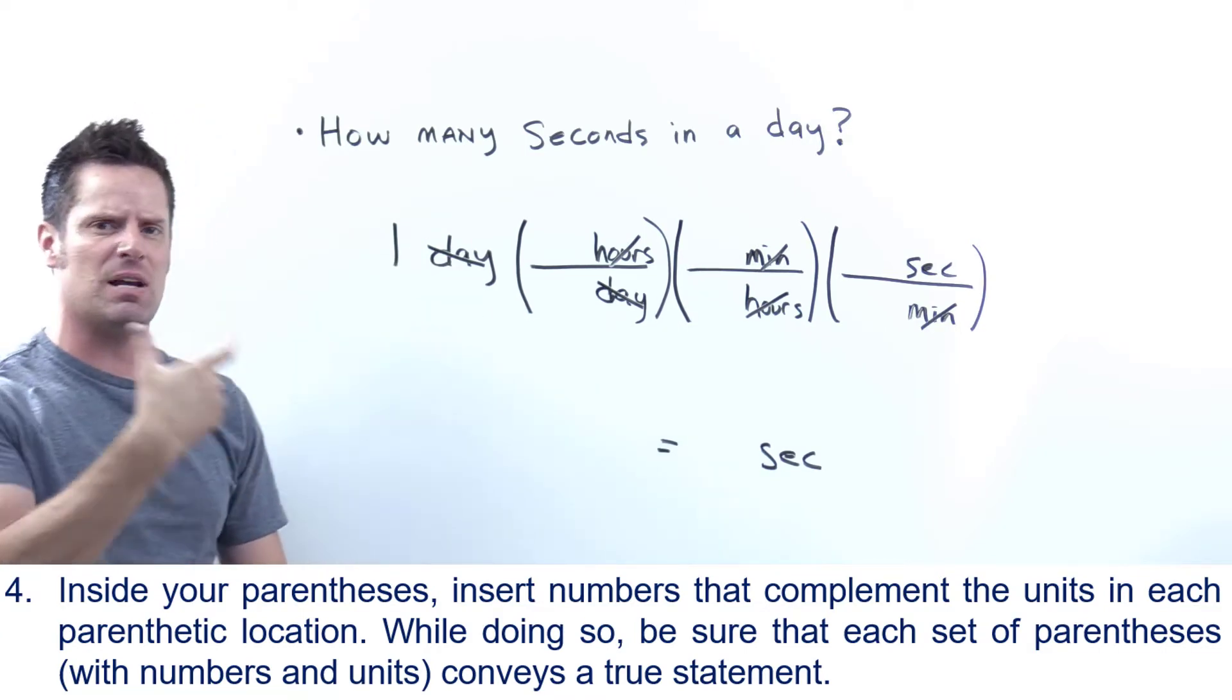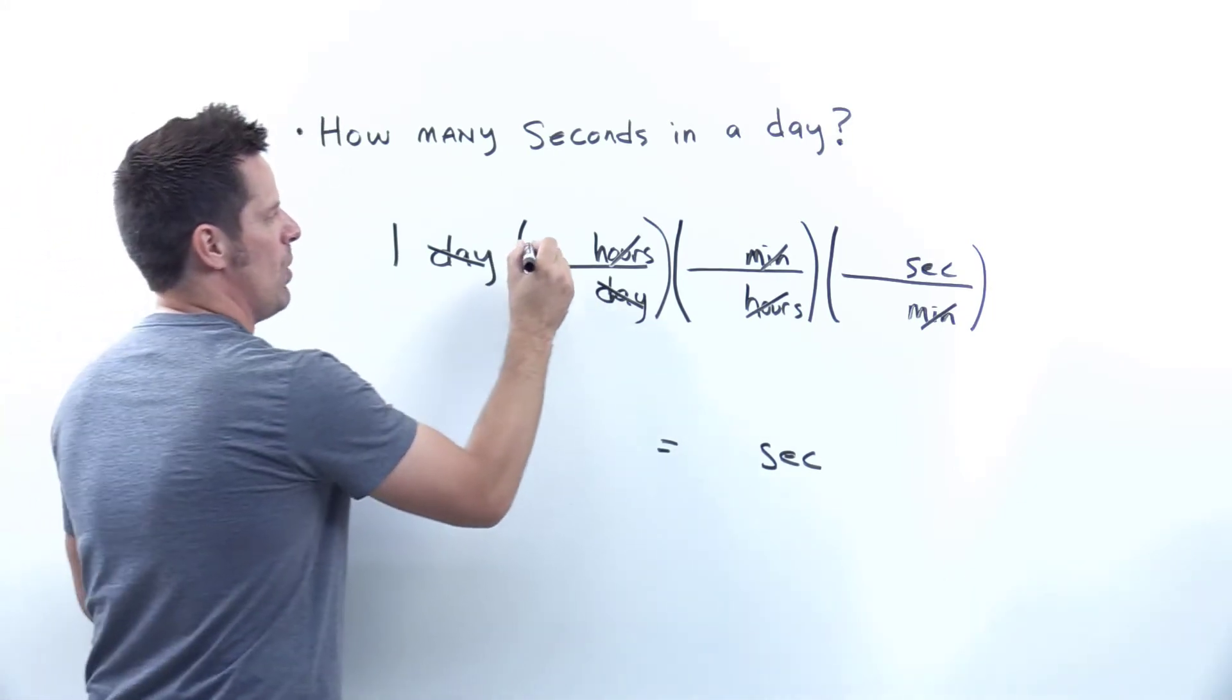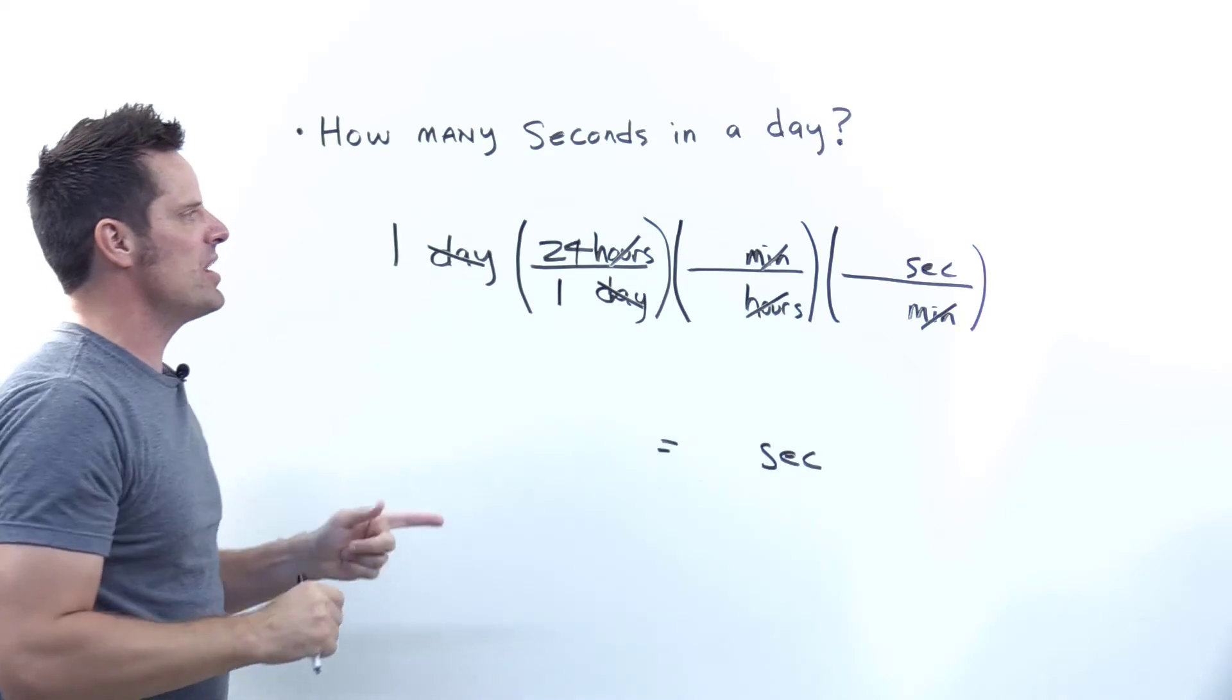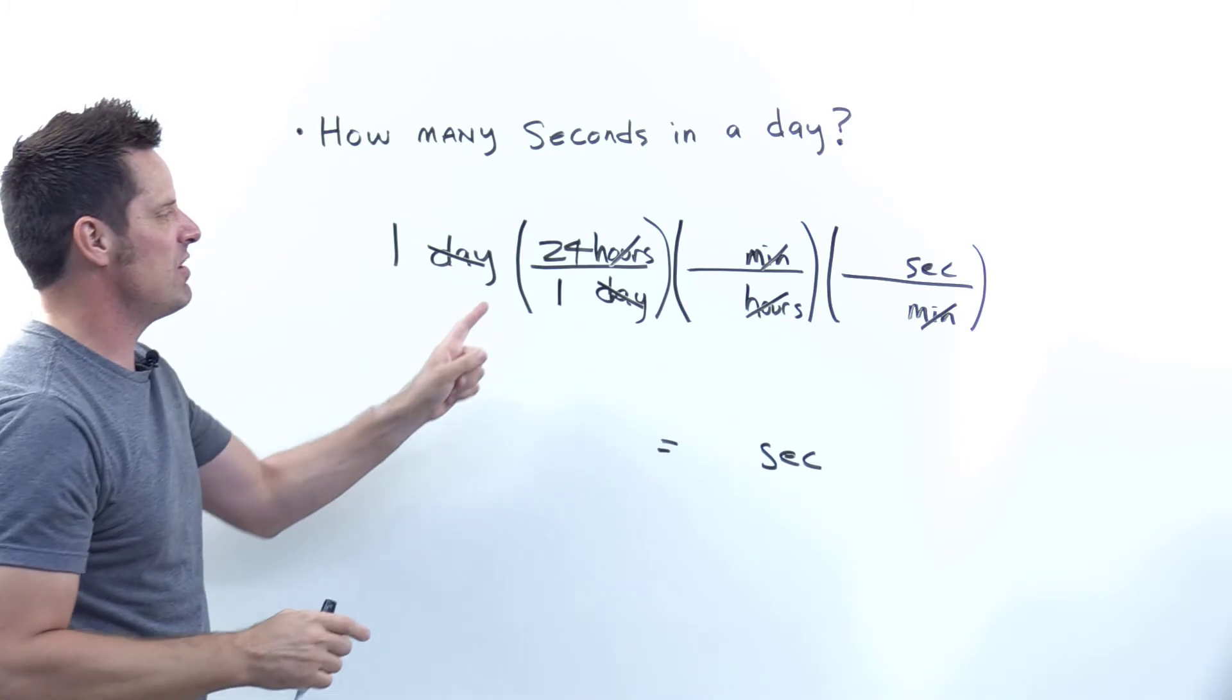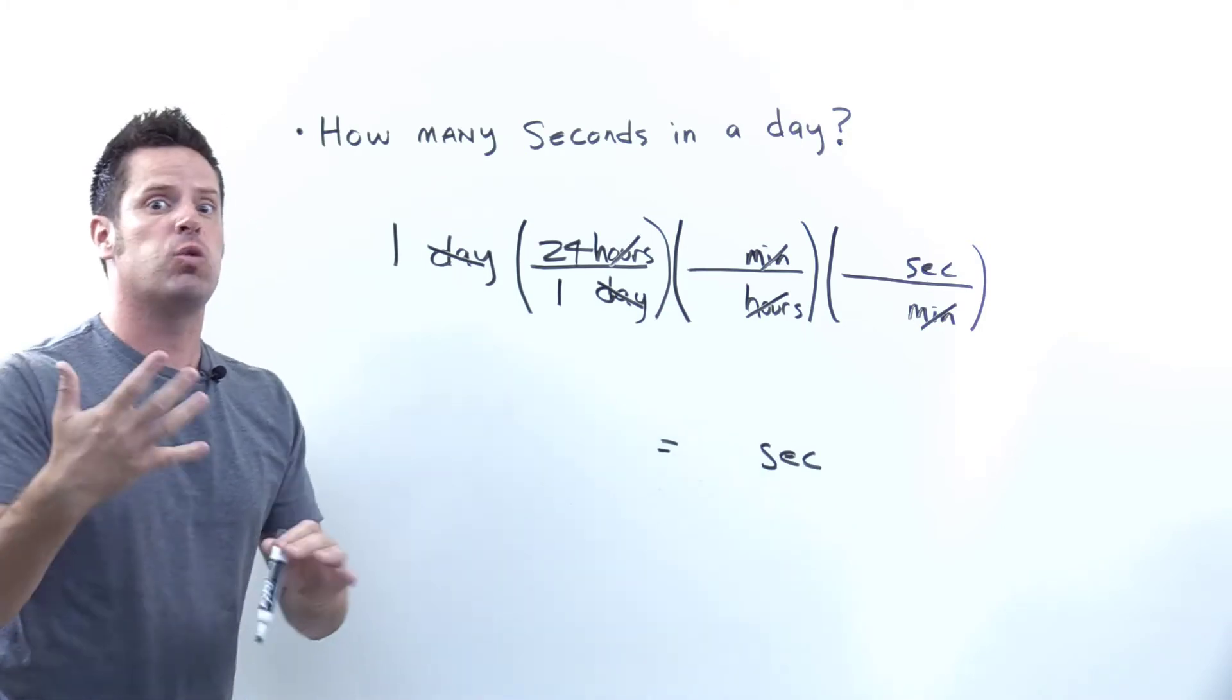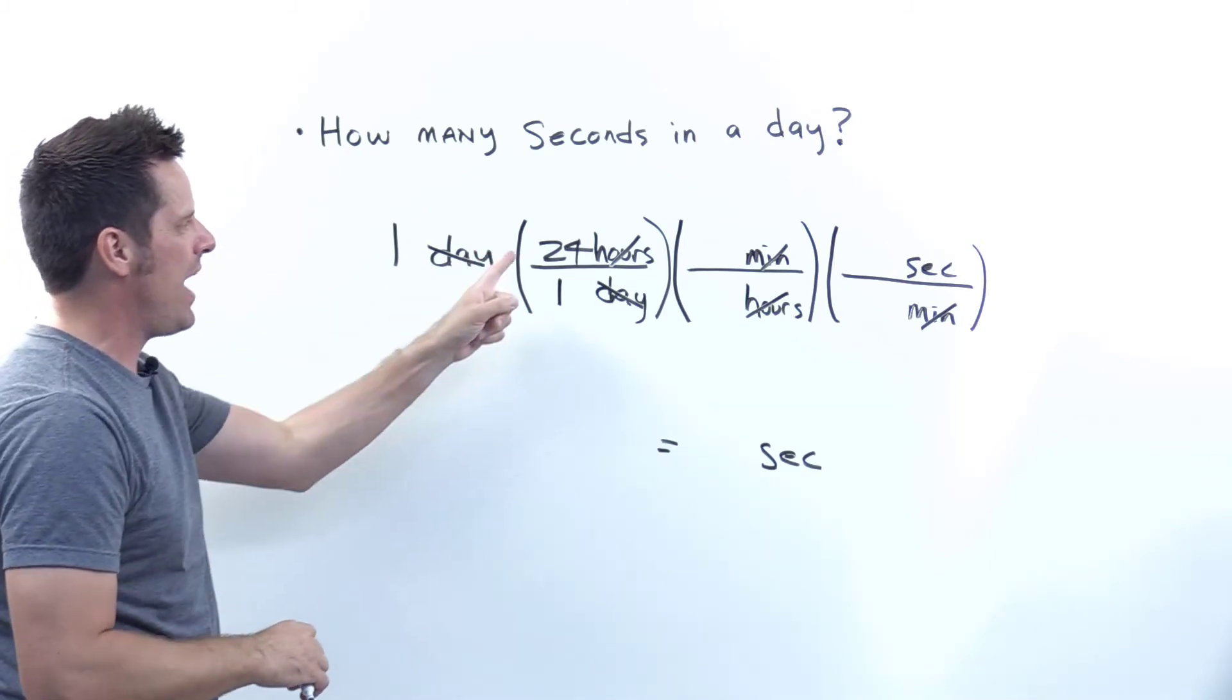So for example, in one day down there, how many hours are there? 24. And the reason I say make sure any time you lay down numbers you step back and ask yourself that I put the numbers in the proper location, because it's very easy if you're doing it too quickly to put them in the wrong location. If you put one on the top and 24 on the bottom, you'd be wrong, because there are not one hour in 24 days. Do you see what I'm saying? So you put the numbers down, then step back and ask yourself: did I put them in the right place? Are there 24 hours in one day?